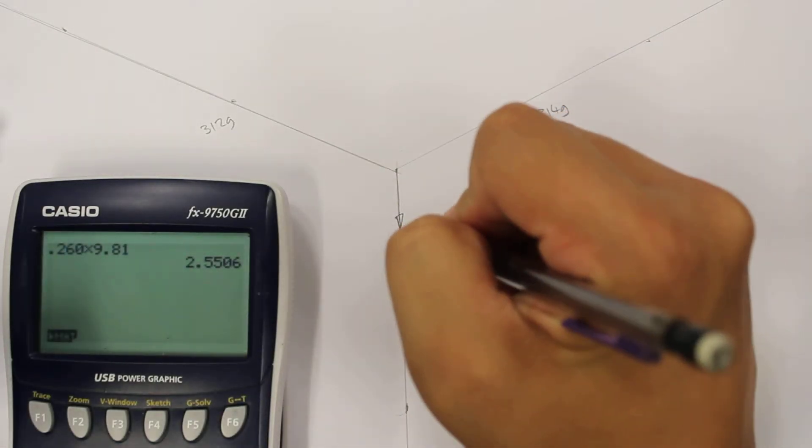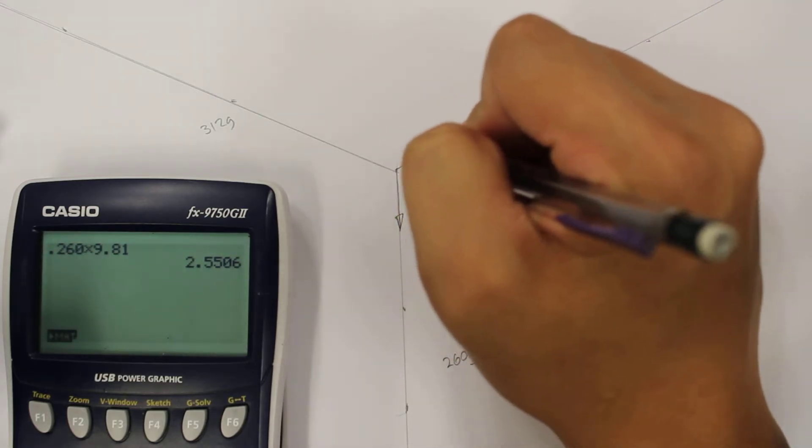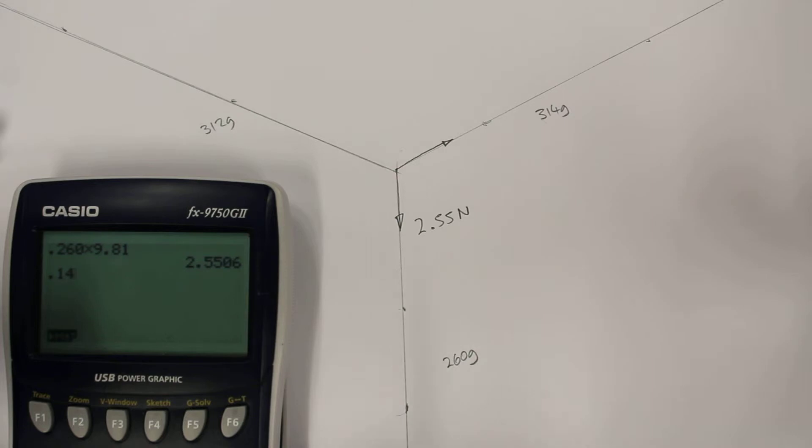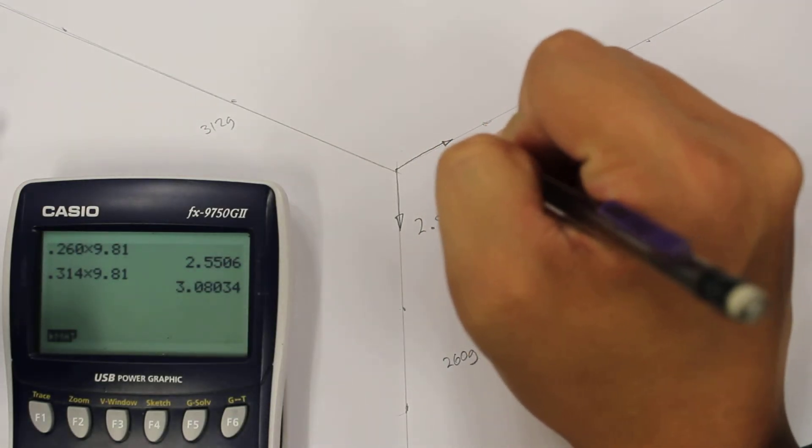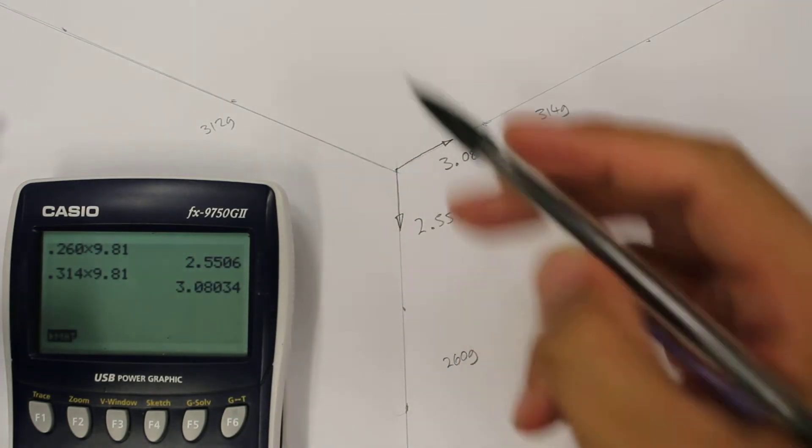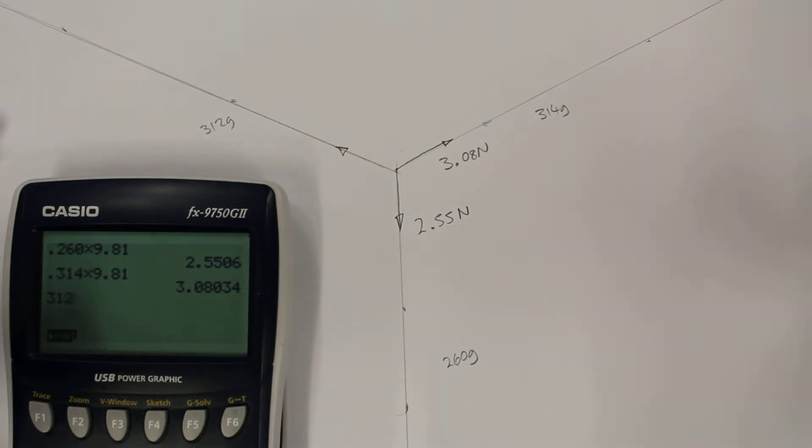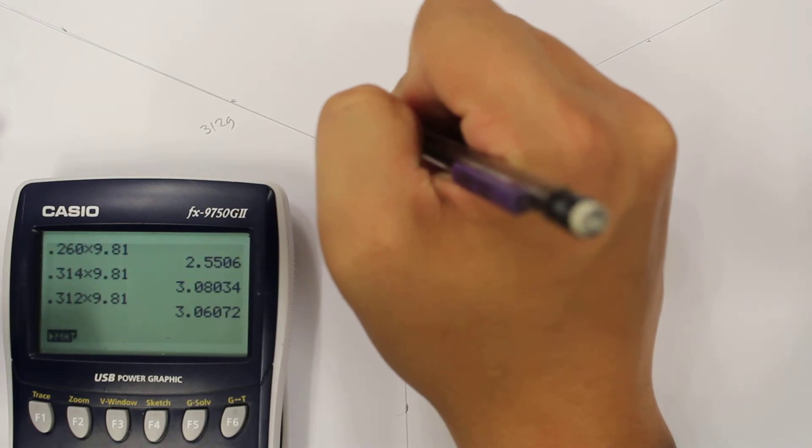Going towards the right we have 0.314 multiplied by 9.81, so towards the right we have 3.08 newtons. And going upwards towards this left hand side we have 0.312 times 9.81 and this is equal to 3.06 newtons.